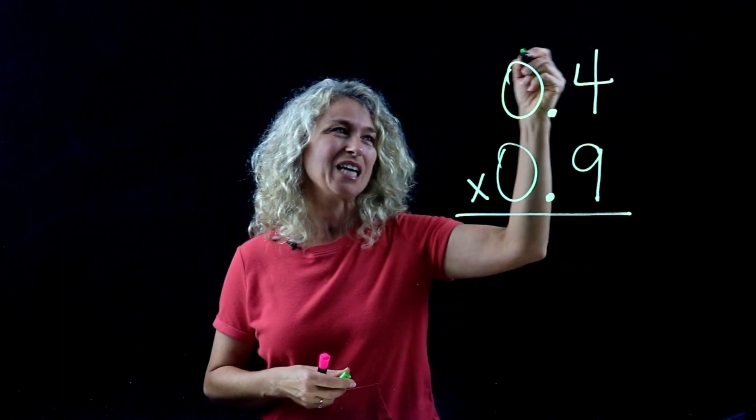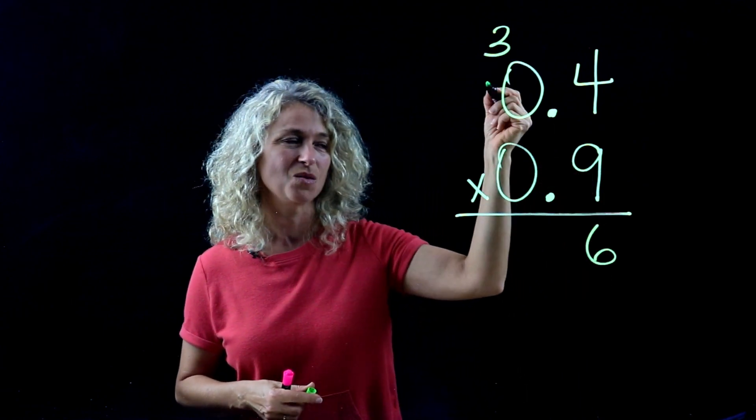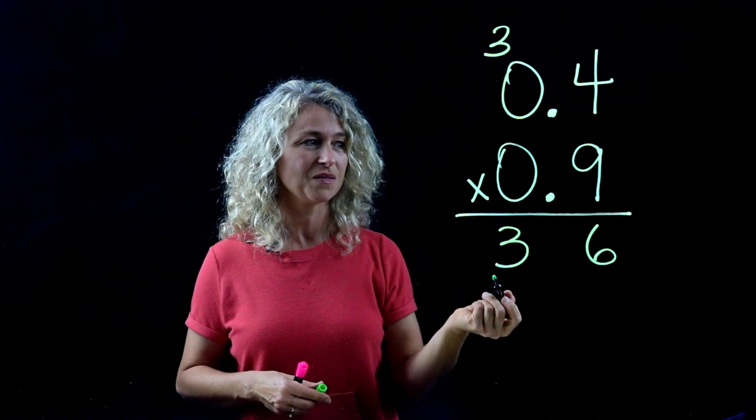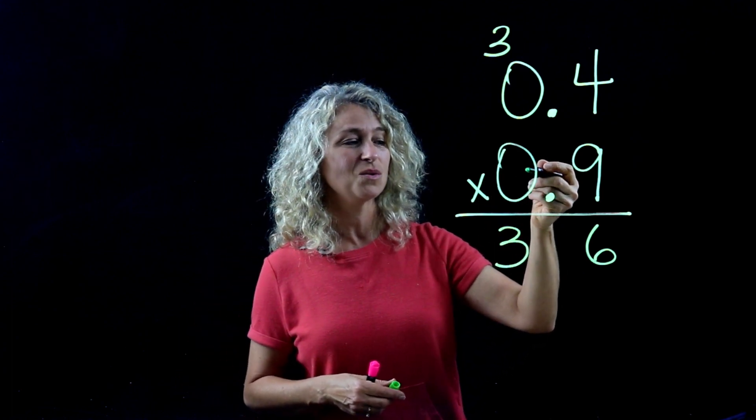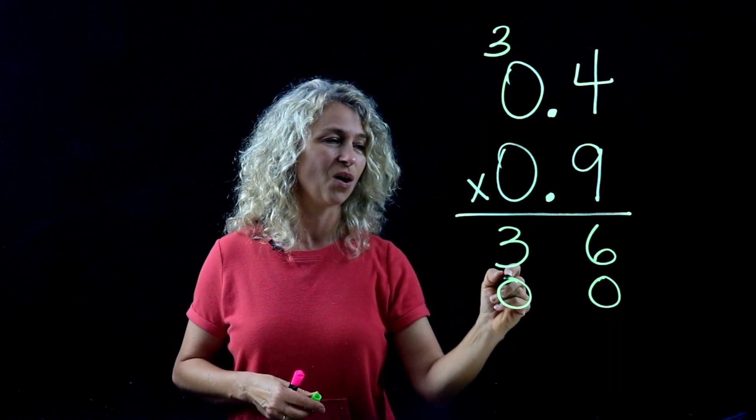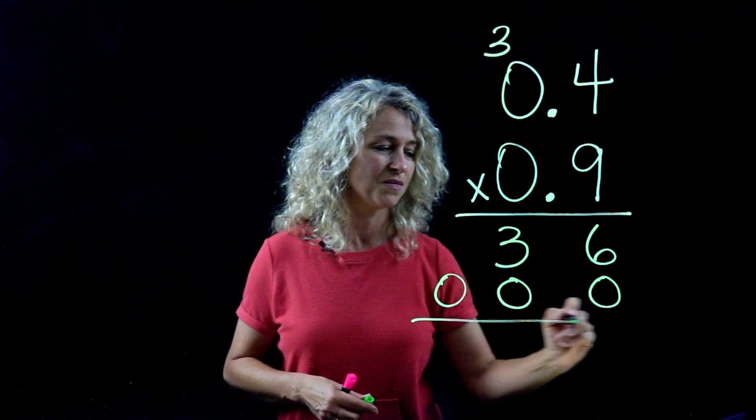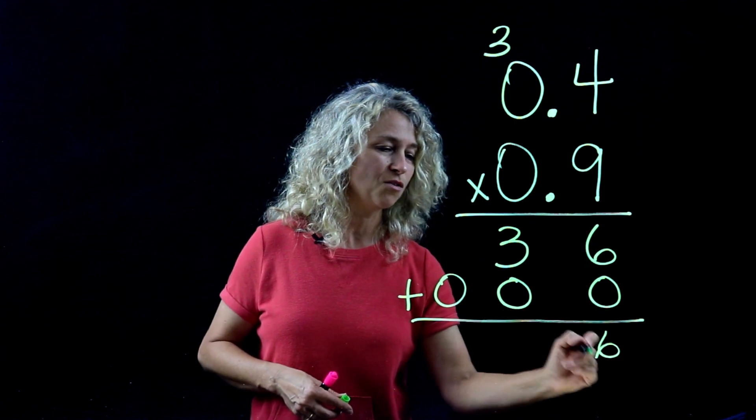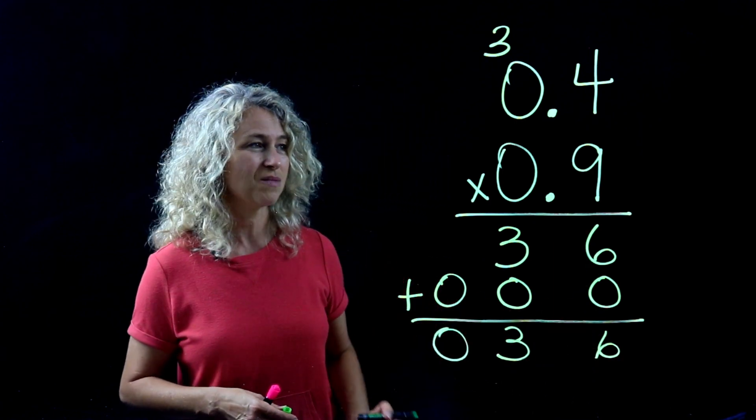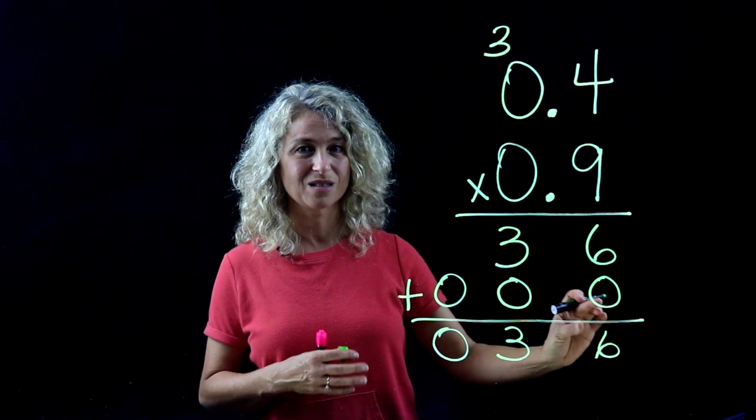So 9 times 4 is 36, 9 times 0 is 0, and then plus 3 is 3. Then you put your placeholder. 0 times 4 is 0, and 0 times 0 is 0. Now if you work that out, you're going to get the same thing if you just did it mentally. 9 times 4 is 36, right?